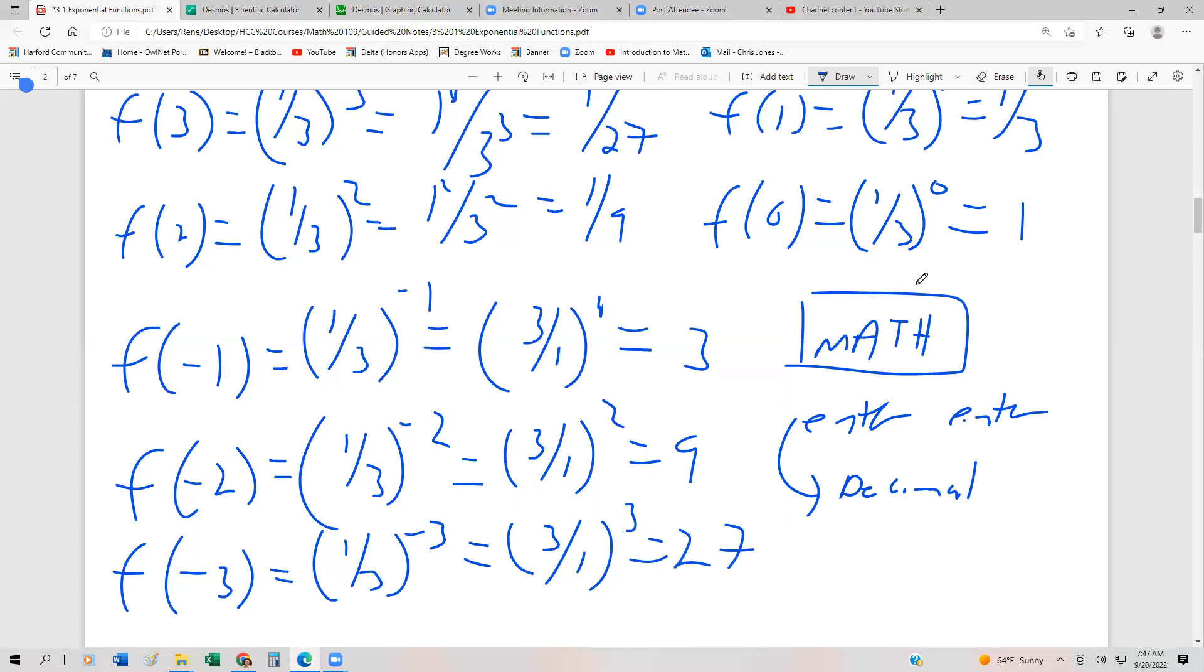So that'll turn a decimal to a fraction, as long as it's a rational number. Now, if it's not rational, in other words, like it's pi or something like that, then it's not going to turn it into a fraction. And sometimes with really small numbers, it can't turn it into a fraction, but for the most part, math enter, enter works really well.